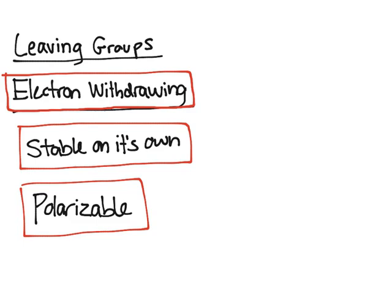And so all of these things down here, electron withdrawing, stable on its own, polarizable, those are characteristics of good leaving groups. And so let's first start with electron withdrawing.